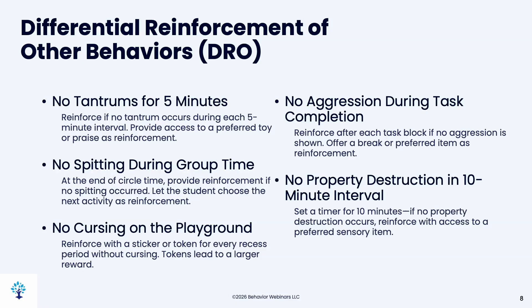DRO examples all involve the absence of a problem behavior for a certain amount of time. No tantrums for five minutes — reinforce the absence of tantrums. They can whine during those five minutes; you have to accept lesser problem behaviors in these scenarios. They can ask for help, they can do anything — just not tantrum. No spitting during group time — give reinforcement if they don't spit. No cursing on the playground — give a sticker for every recess period without cursing. No aggression during task completion. No property destruction in a 10-minute interval.